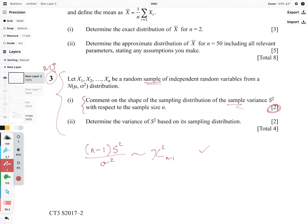The tricky part comes with commenting on the shape. We want to talk about the shape with respect to the sample size n. How are these two related?